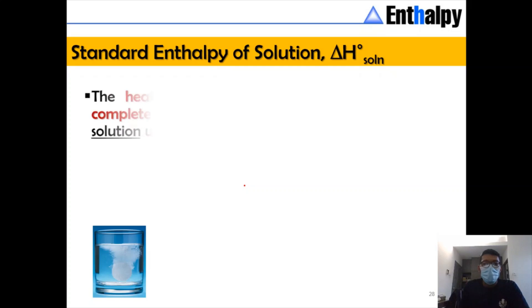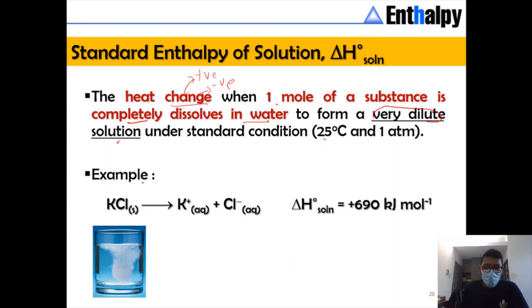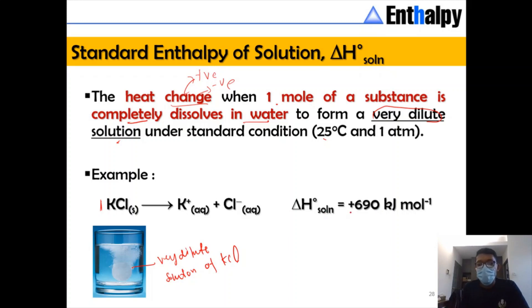The standard enthalpy of solution is the heat change — which can be positive or negative — when one mole of a substance is completely dissolved in water to form a very dilute solution under standard conditions. For example, one mole of KCl dissolved in water forms K⁺(aq) and Cl⁻(aq) in a very dilute solution. This is an endothermic reaction with ΔH°_sol = +69.0 kJ/mol, but it can be positive or negative depending on the substance.